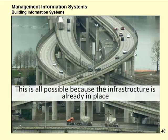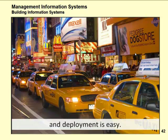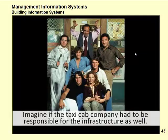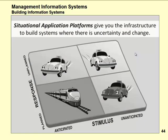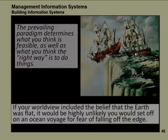This is all possible because the infrastructure is already in place. Imagine a taxi — if they had to provide the roads as well, that would cause them real problems. Their roads are already there, so it's easy. Situational application platforms give you the infrastructure to build systems where there is uncertainty and change. But you need a different mindset to get the most out of them. You can't build or run a railroad like you would a taxi company.